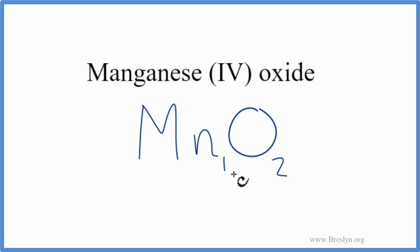We don't write the 1 by convention, so we can just delete that. And this is the correct formula for MnO₂, manganese(IV) oxide.